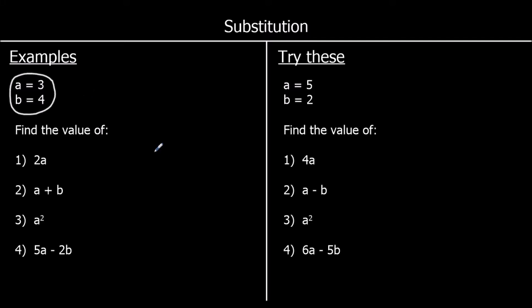So wherever we have a, we're going to change it to 3, and wherever we have b, we're going to change it to 4. The first question says find the value of 2a. 2a means 2 times a, and we're changing a to 3, so we're going to have 2 times 3, and 2 3s are 6.